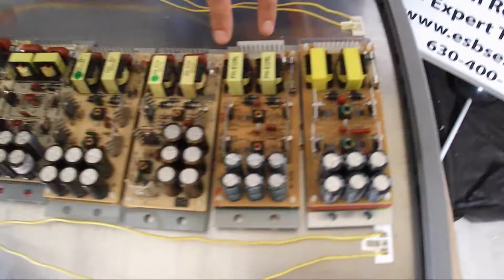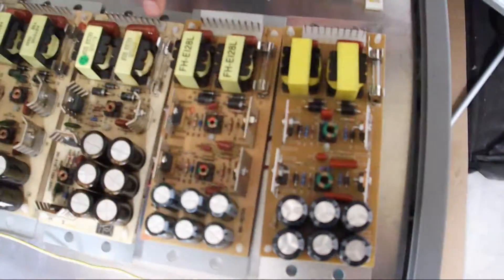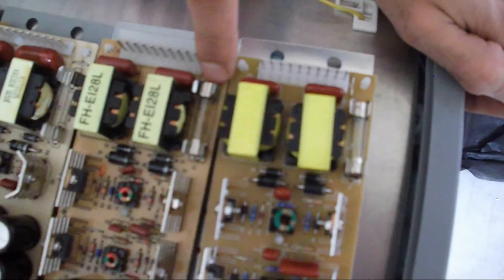All of these ballasts have jumper wires in the corner here by the fuse in the 10-pin connector, and that is your voltage selector. Intact, this jumper would be set for 120 volts.